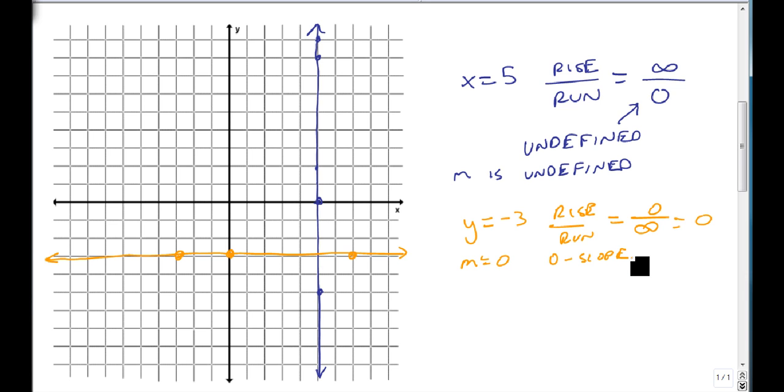Now, I want you to be careful because I don't like the term no slope because no is a little ambiguous. So we'll always refer to our slope as being undefined or our slope as being a 0 slope. We will not use the term no slope.